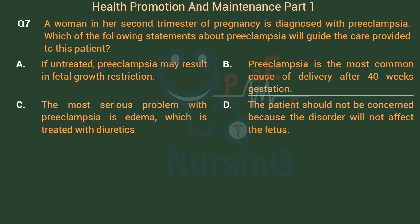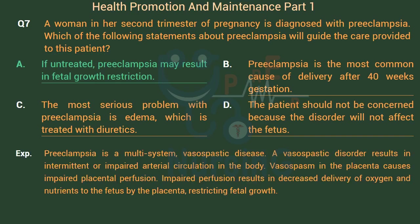The right answer is Option A: If untreated, preeclampsia may result in fetal growth restriction. Preeclampsia is a multi-system, vasospastic disease. A vasospastic disorder results in intermittent or impaired arterial circulation in the body. Vasospasm in the placenta causes impaired placental perfusion, resulting in decreased delivery of oxygen and nutrients to the fetus, restricting fetal growth.